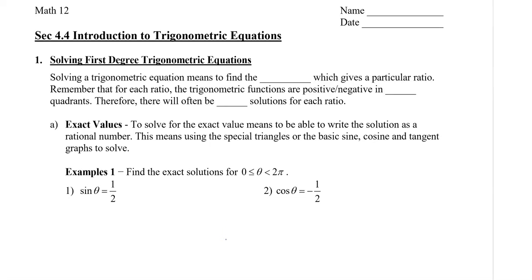In this video, I'm going to show you how to solve trigonometric equations by finding exact solutions and also finding approximate solutions using our calculator. We're going to start by looking at first-degree equations. First degree means that our trig functions are all to a power of 1. Solving a trig equation means finding the angle which gives a particular ratio. For each ratio, the trig functions are positive or negative in two quadrants, and therefore there will often be two solutions for each ratio.